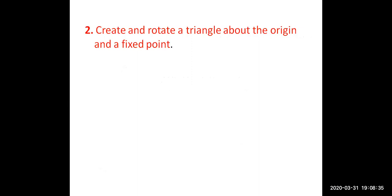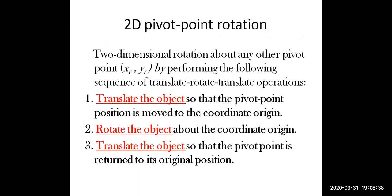This program demonstrates rotating a triangle about the origin and a fixed point. To rotate an object, three sequences of operations are performed: first, translate the object so that the pivot point is moved to the coordinate origin; second, rotate the object about the coordinate origin; third, translate the object so that the pivot point is returned to its original position.